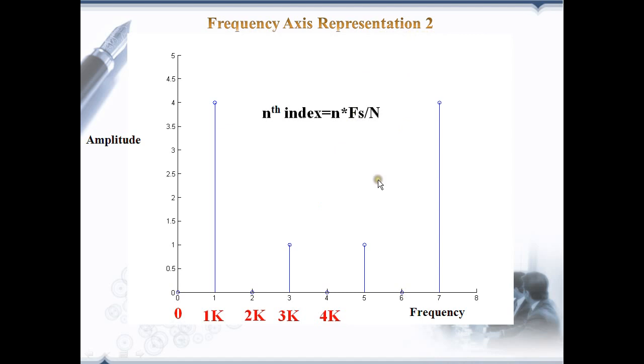The second method is based on the sampling frequency that we are using in a particular application. Let us take the same example that we have used in the previous episodes. We have used the sampling frequency of 8 kHz. The frequency axis runs from 0 to 4 kHz, which is the Nyquist frequency fs by 2.